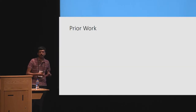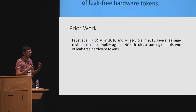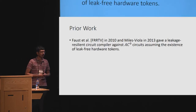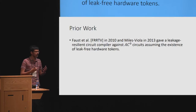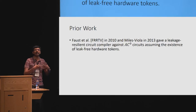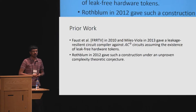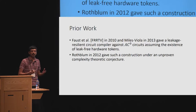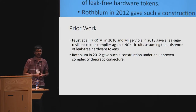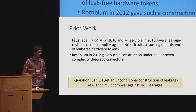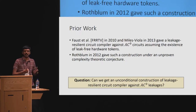Let me give a brief overview of prior work in this area. Faust et al. in 2010 and the subsequent work of Miles and Viola in 2013 gave leakage-resilient circuit compilers against AC0 circuits, assuming the existence of leak-free hardware tokens — a fairly strong assumption we would like to avoid. In 2012, Rothblum gave a construction that does not use any leak-free hardware tokens. However, its security analysis relied on an unproven complexity-theoretic conjecture regarding AC0 circuits. A long-standing open problem in this area is to construct an unconditional leakage-resilient circuit compiler against AC0 leakages.